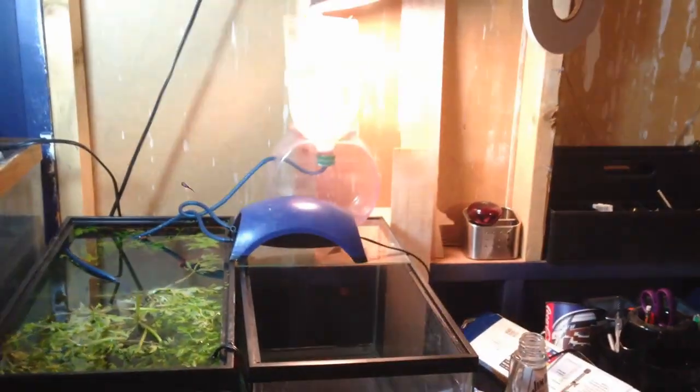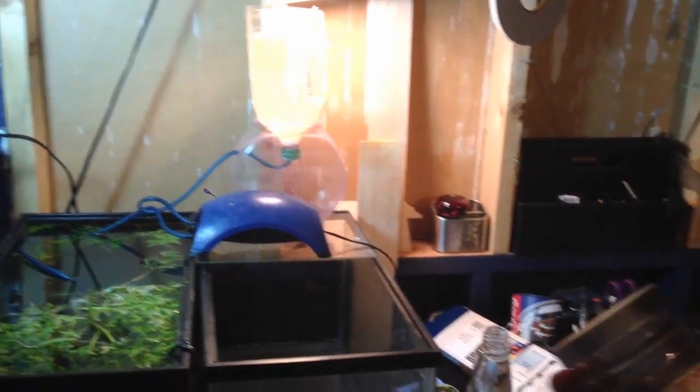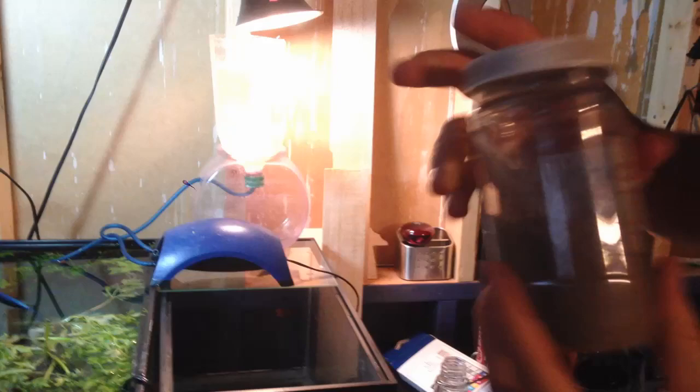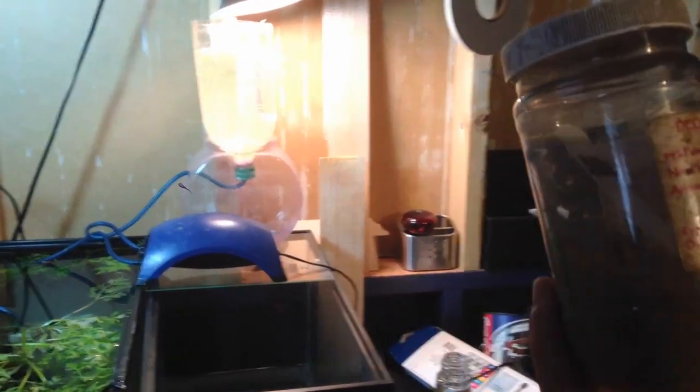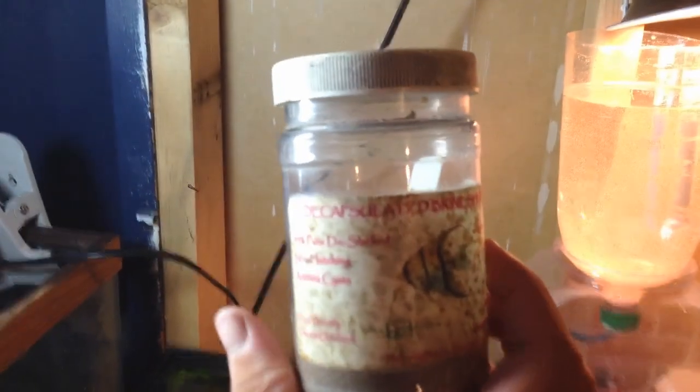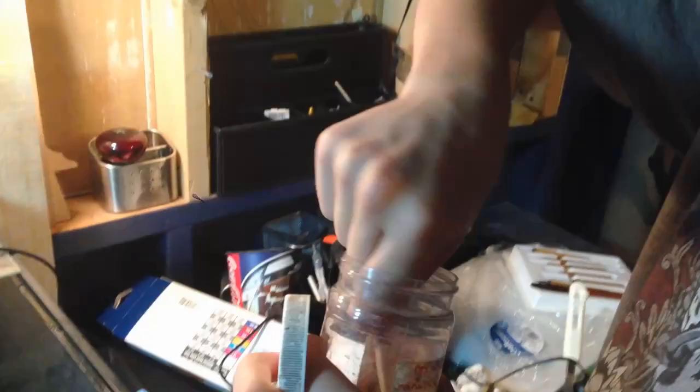And what I use for the eggs is just this brine shrimp eggs that you can order. This was 3 bucks. This holds several million eggs. And all you gotta do is open that up, take a capful out, and then put it in. One capful is like a hundred thousand eggs.